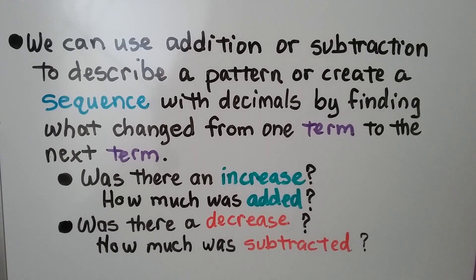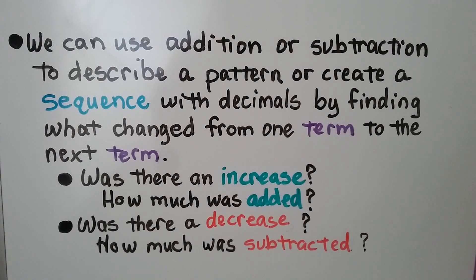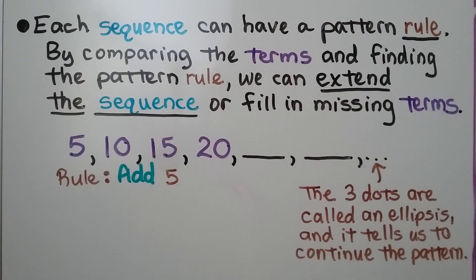We can use addition or subtraction to describe a pattern or create a sequence with decimals by finding what changed from one term to the next term. Was there an increase? How much was added? Was there a decrease? How much was subtracted? Each sequence can have a pattern rule. By comparing the terms and finding the pattern rule, we can extend the sequence or fill in missing terms.